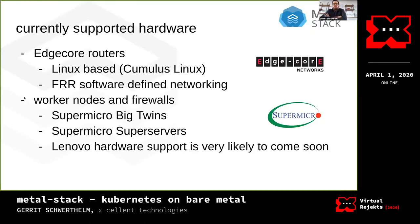Let's talk about the hardware we currently support. Adding more machine types and manufacturers is quite cumbersome, and we are working on making this easier. For now you'd probably be better off using the hardware we use: switches are from Edge Core running Cumulus Linux, and the routing daemon must be FRR because the automation is built on FRR configs. Worker nodes and firewalls are all Supermicro servers. We already have one adopter who will be adding Lenovo support, so it's pretty likely we'll support Lenovo in the future.